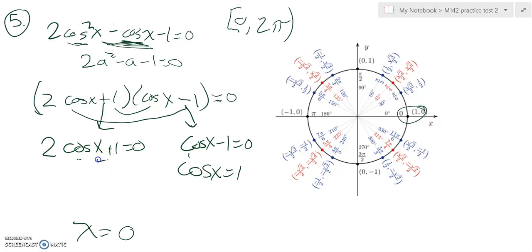This one, subtract one from both sides. 2 multiplied by cosine of X is negative one, divided by two. Cosine of X equals negative one-half.